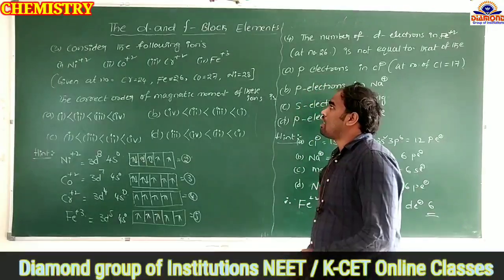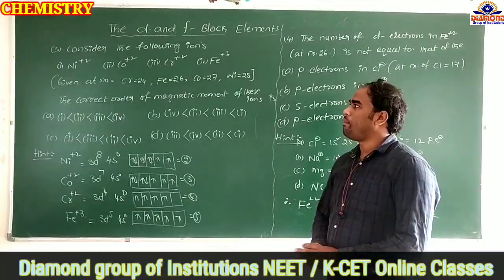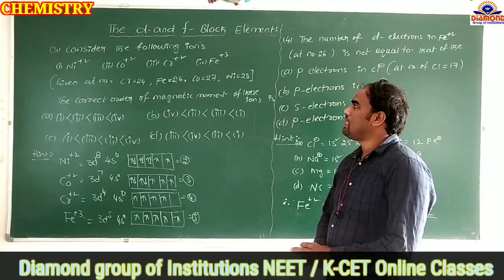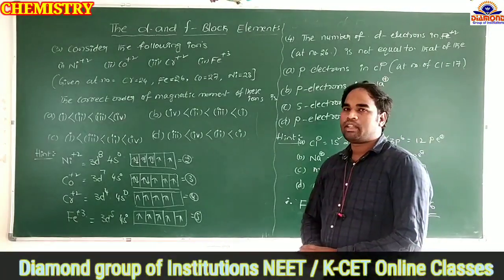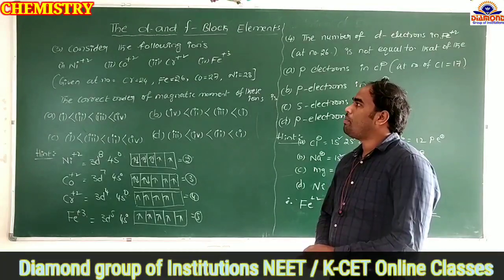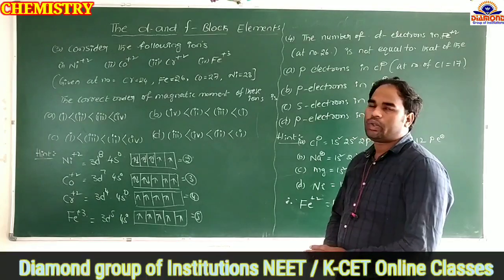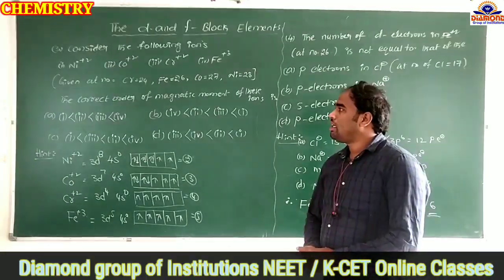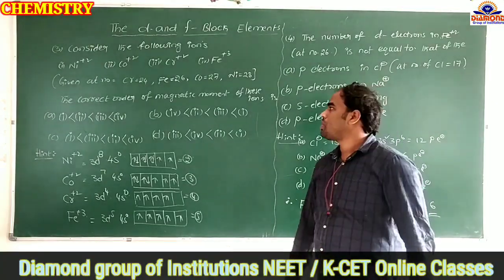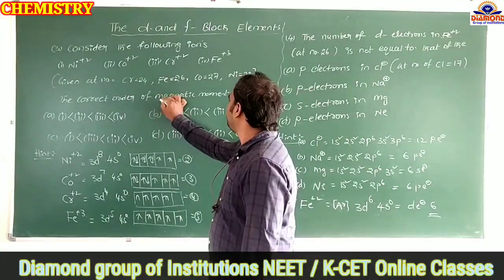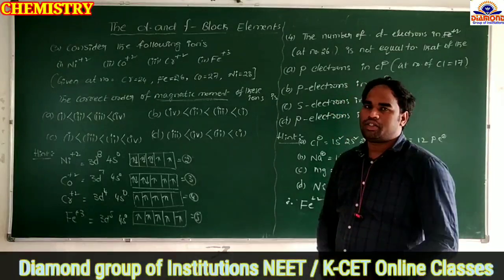Question 3: Consider the following ions — Ni²⁺ (Ni: Z=28), Co²⁺ (Co: Z=27), Cr²⁺ (Cr: Z=24), Fe³⁺ (Fe: Z=26). What is the correct order of magnetic moment of these ions? Magnetic moment depends on the number of unpaired electrons.